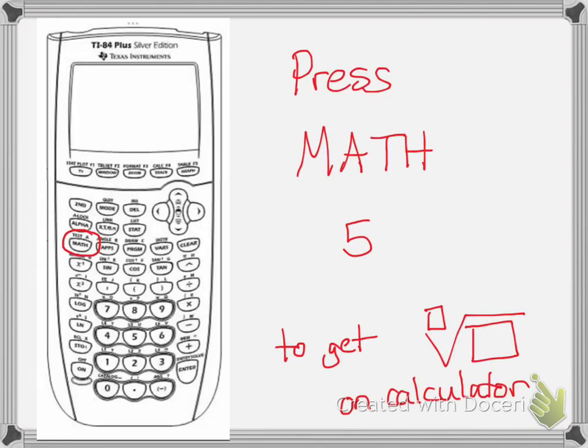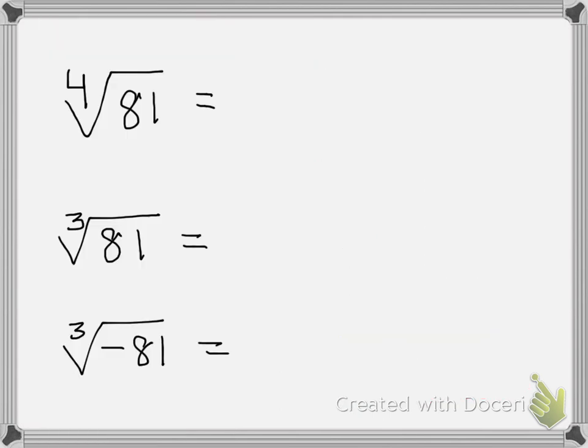I got you. First thing you're going to do is press math, then press the number five, and then this should pop up on your calculator. When it does, just type in four for the nth root and 81.